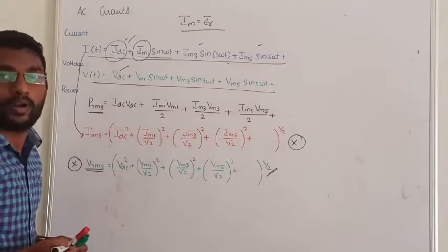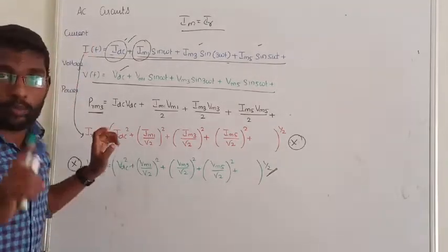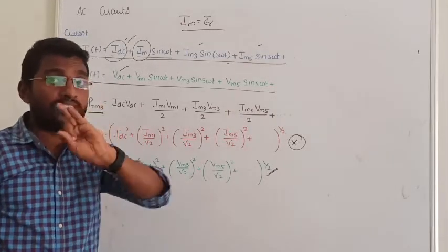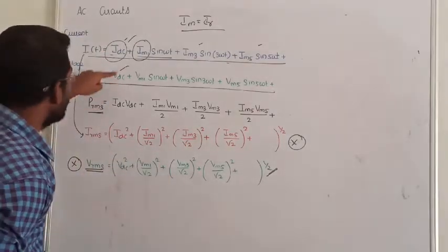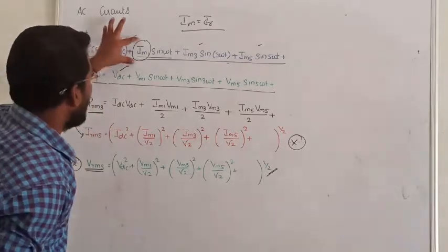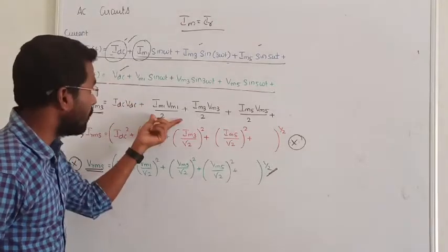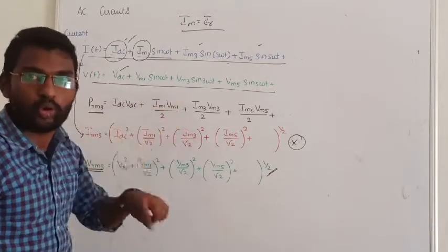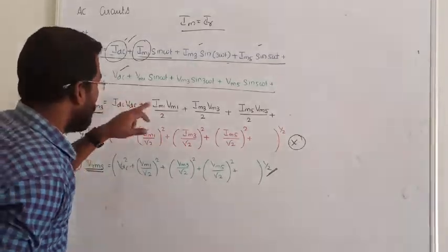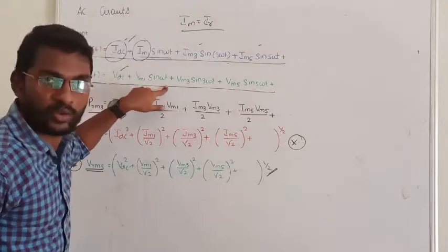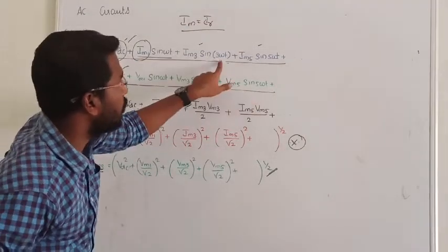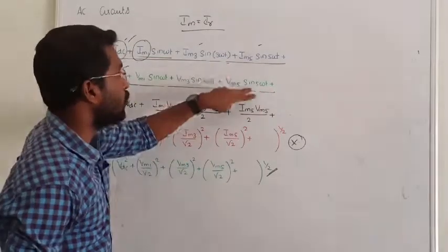For power: only components of the same frequency can multiply together to give non-zero average power. DC voltage times DC current gives V_DC × I_DC. For AC fundamental components: (V_MAX1/√2)(I_MAX1/√2) × cos(φ1) = V_MAX1 × I_MAX1 / 2 × cos(φ1). Different harmonic frequencies multiply to zero — two different frequencies are always orthogonal to each other.